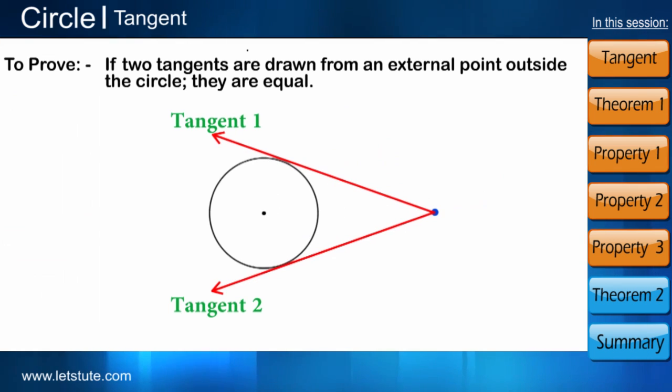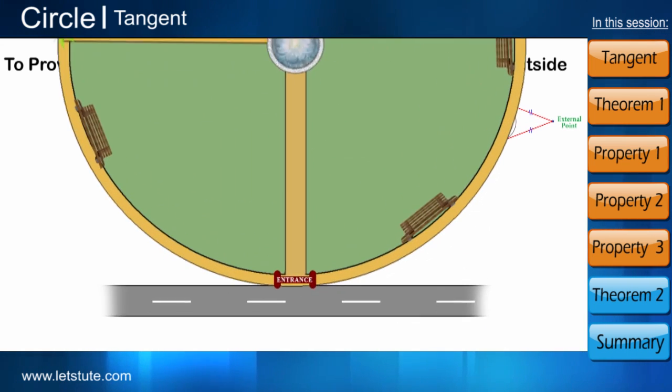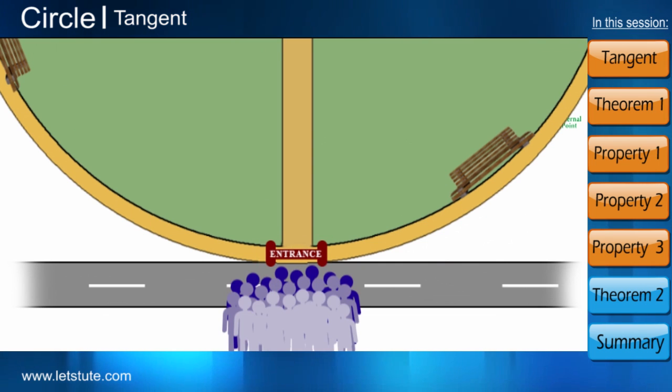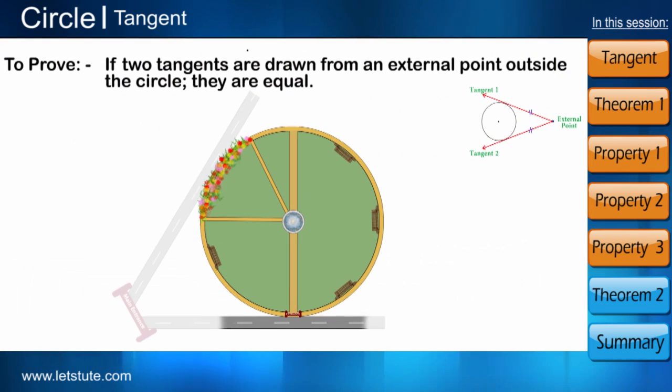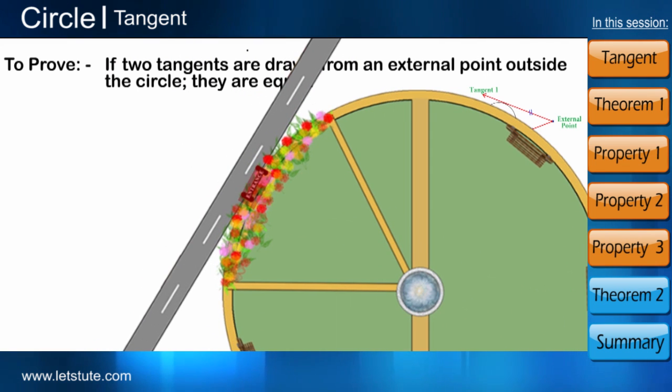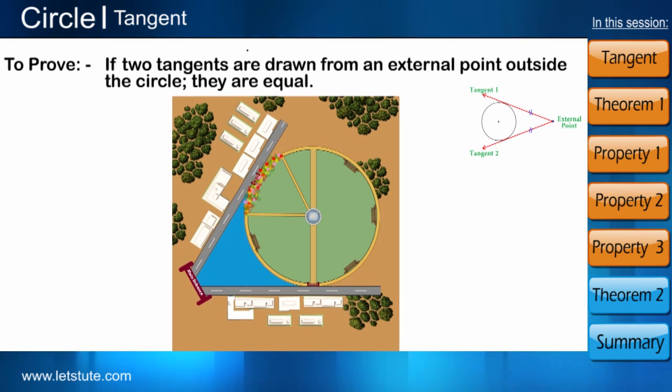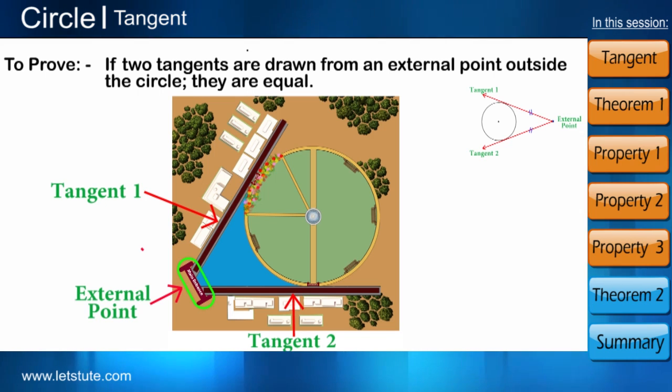Now let us prove that if two tangents are drawn from an external point outside the circle, they are equal. As we saw that the park has only one entrance and because of which there was a lot of inconvenience for the visitors. So the owner decided to make another entrance to the park. The park is situated in a huge complex and the owner wanted that both the entrance gates should be equidistant from the main entrance of the complex. Now as we know that the park is circular and the gates are on the boundary of it, these two parts will behave like tangents to the park from a common external point where the external point is the main entrance.